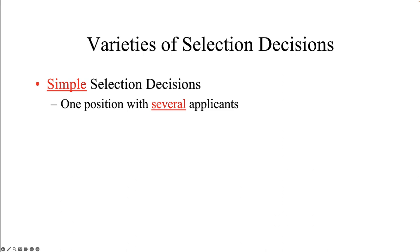In a simple selection decision scenario, information processing demands on the hiring manager are lower. In this condition, there is one position with several applicants being considered. The process will be less costly and complex if there is only one actual job opening and a few, maybe ten, people applying. Of course, the process becomes more expensive and time consuming if an organization has numerous openings.